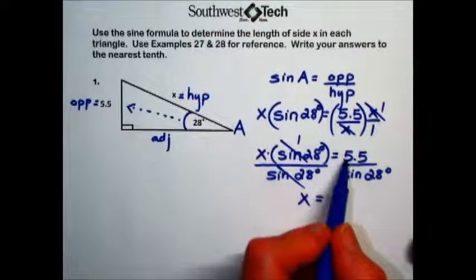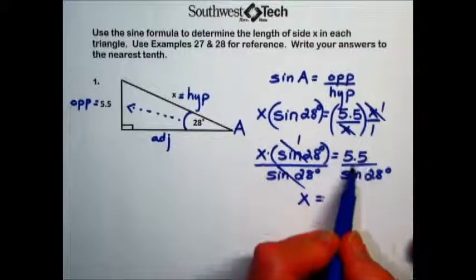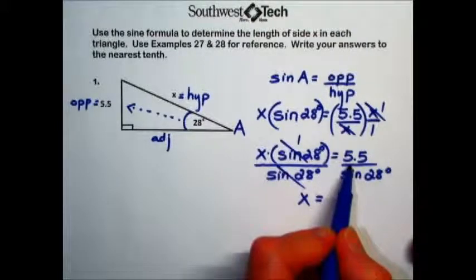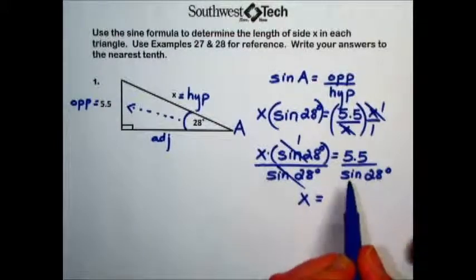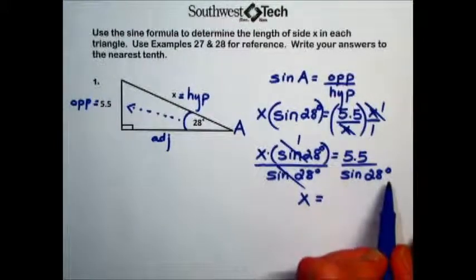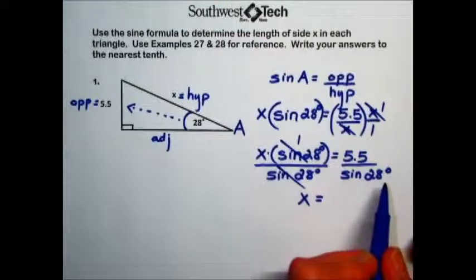5.5 divided by, and if you have a traditional calculator, you would then put 28, sine key, and hit your equals to find the value. If you have a direct algebraic logic calculator,